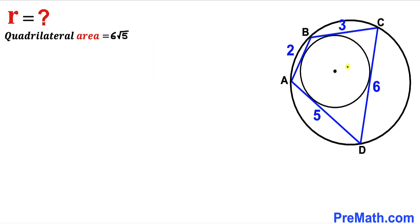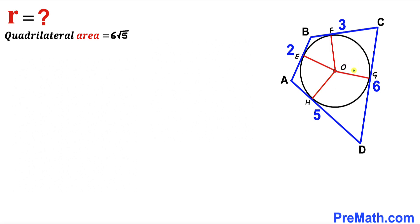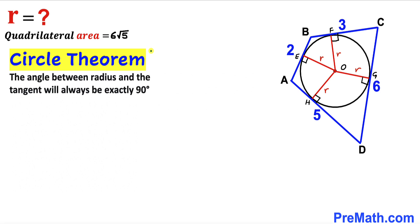We have now found the area of cyclic quadrilateral ABCD as 6√5. Now I have reintroduced the smaller circle. The big circle is removed, and we can see that O is the center of the inscribed circle, while E, F, G, and H are the points of tangency. Connecting center O to all points of tangency, we observe that OE, OF, OG, and OH are the radii of this circle, each labeled lowercase r.